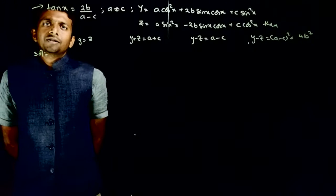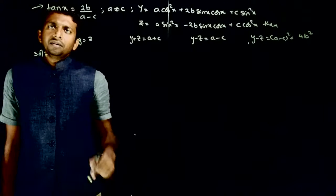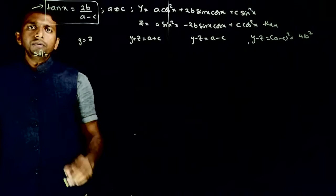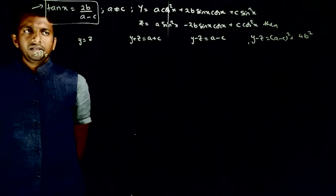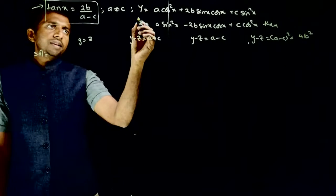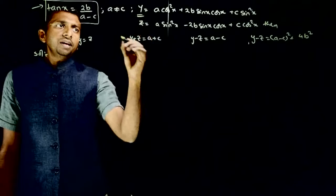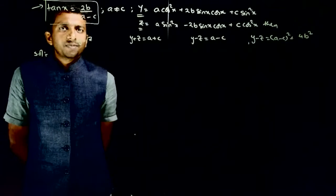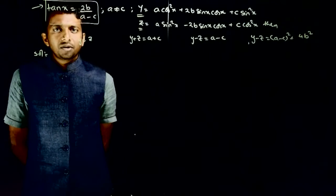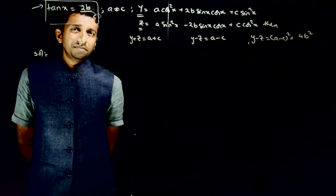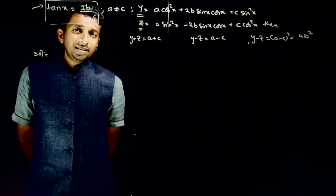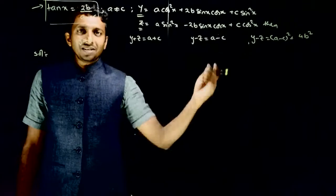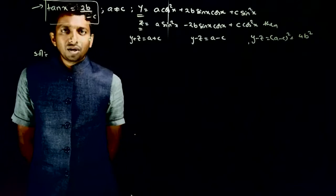Welcome students. Let us look at this question. Given that tan x is equal to 2b divided by (a minus c), and you are given the expression for y and z. y is equal to a cos²x plus 2b sin x cos x plus c sin²x, and z is equal to a sin²x minus 2b sin x cos x plus c cos²x.